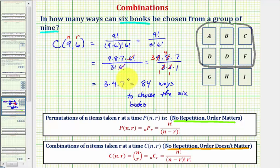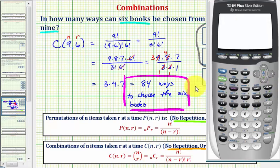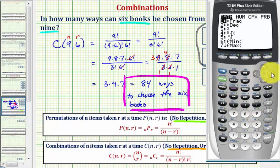Before we go though, let's check our work on the graphing calculator. We can evaluate nine choose six on the calculator, though the calculator does use this notation here. So we begin by entering n, which is nine, and then we press math, right arrow to probability. Notice combination is option three, so we press three.